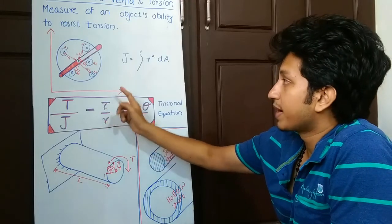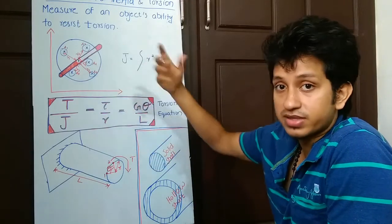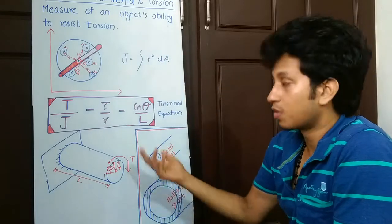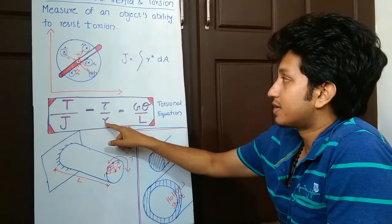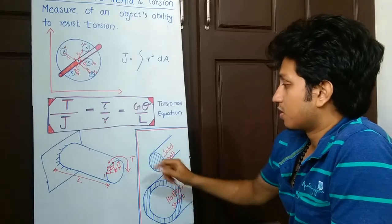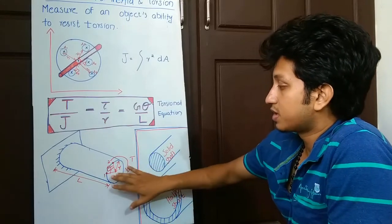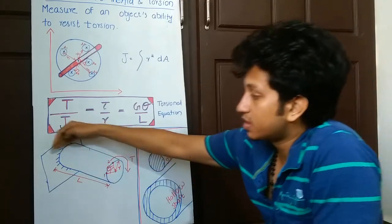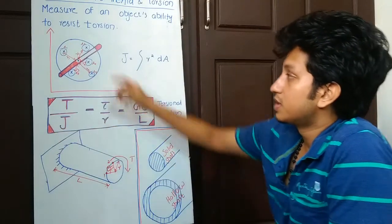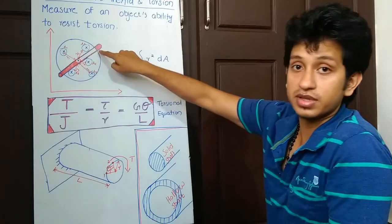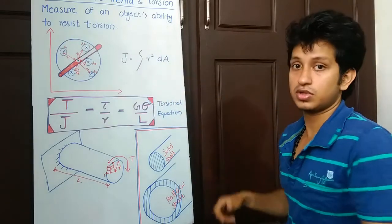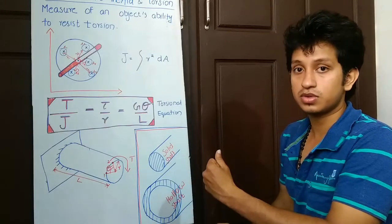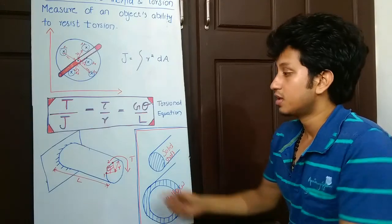The equation is: torque by polar moment of inertia equals tau, which is the maximum shear stress withstandable by that particular material—whether it's steel, copper, or whatever. r is the radius. Let's check out with this figure: r is the radius, this end is fixed, and we try to rotate it.